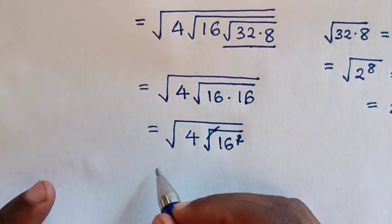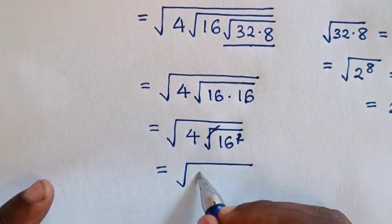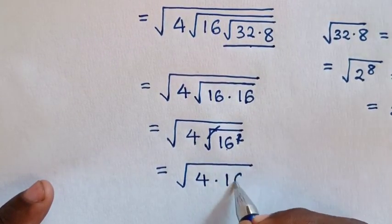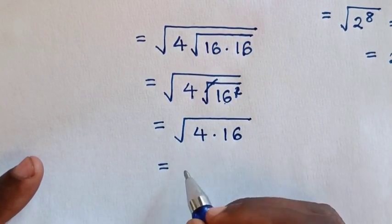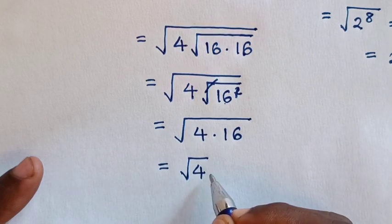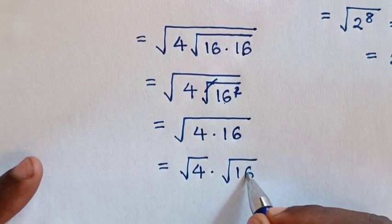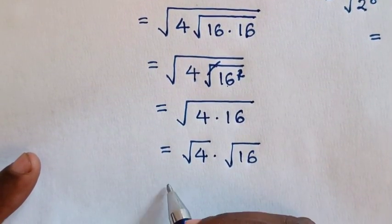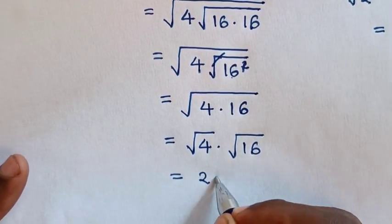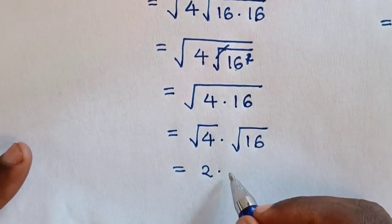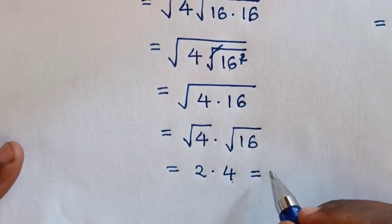Then it will be equal to square root of 16, then square root of 4 times square root of 16, which will be equal to — square root of 4 is 2, times 8. So it will be equal to 2 times 4 is 8.